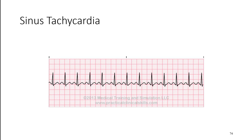Now, sinus tachycardia is a near and dear cousin. Same rules apply: we've got a normal-looking QRS complex, a single-looking P wave, and the R-to-R intervals look consistent as well, but it looks to be running a little bit fast.